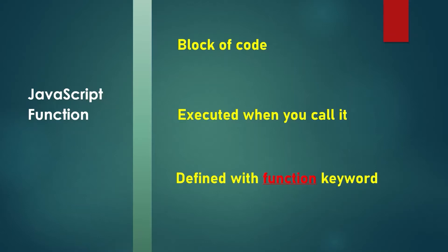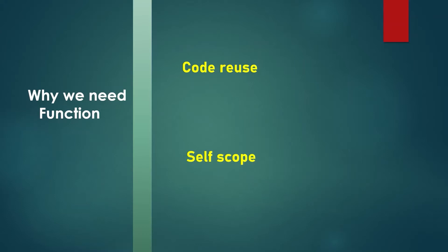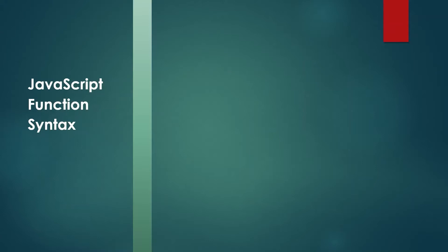Why do we need a function in JavaScript? When code is wrapped in a function, it can be used anywhere in the script by calling that same function — that means it can be reused. One of the major features of a function is that it has its own scope. A variable declared inside a function can be used by code inside the function, but code outside the function cannot use that variable, which makes functions more powerful.